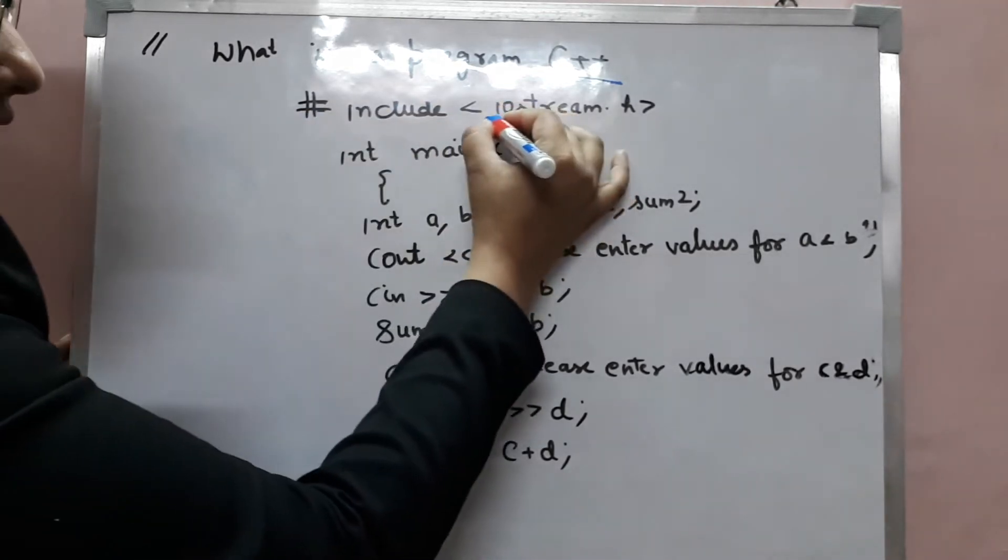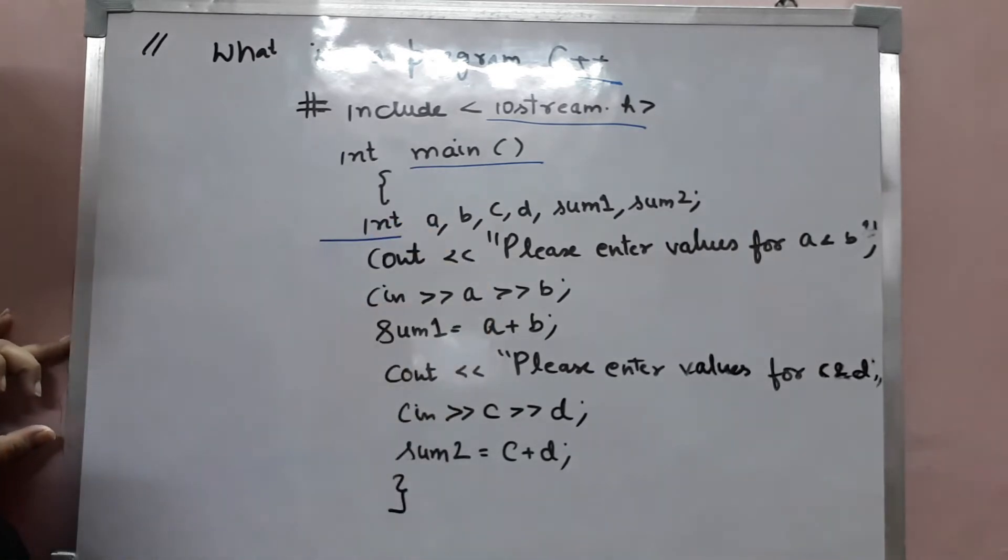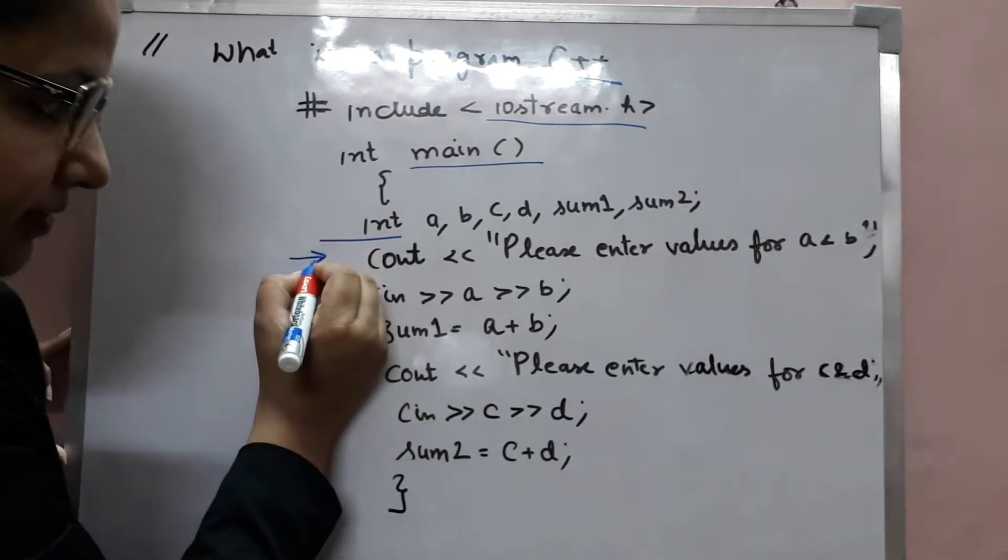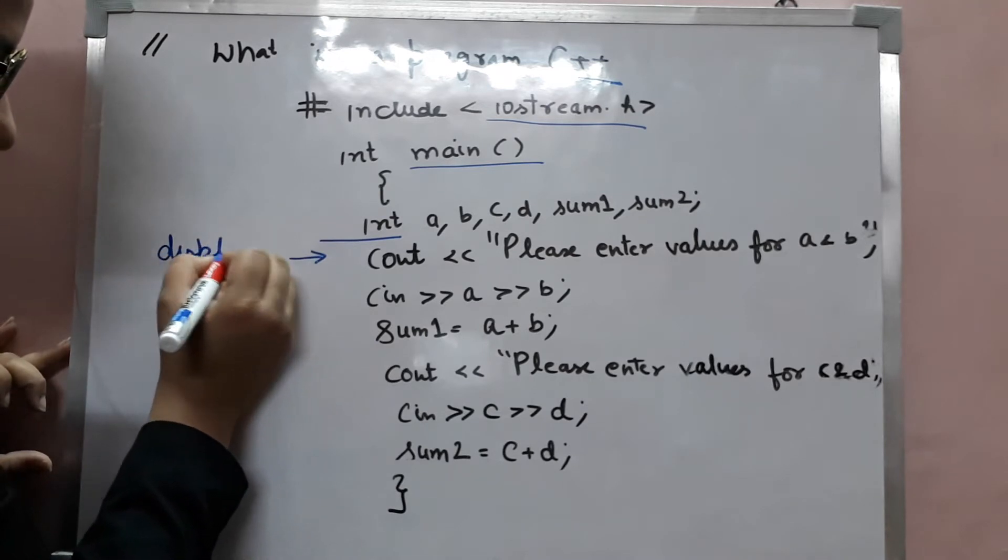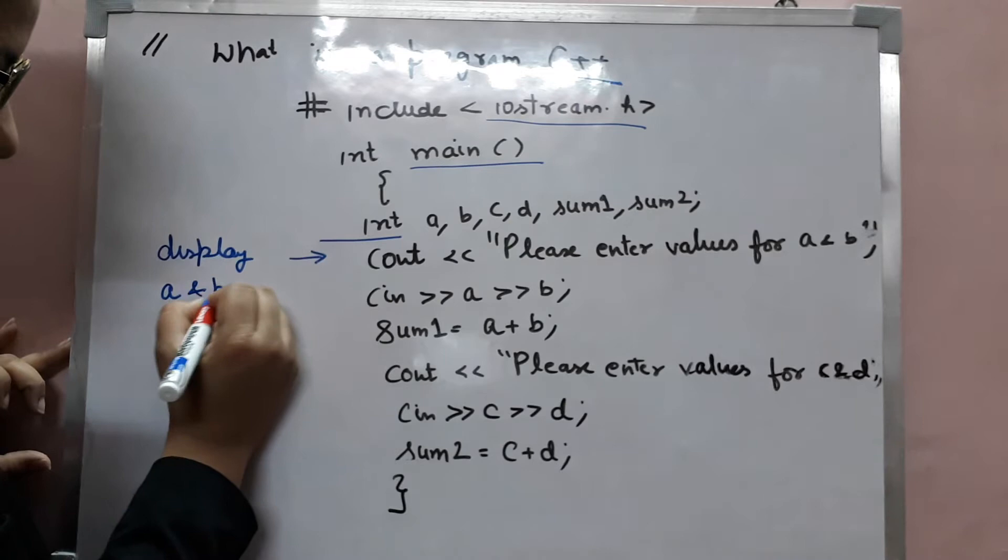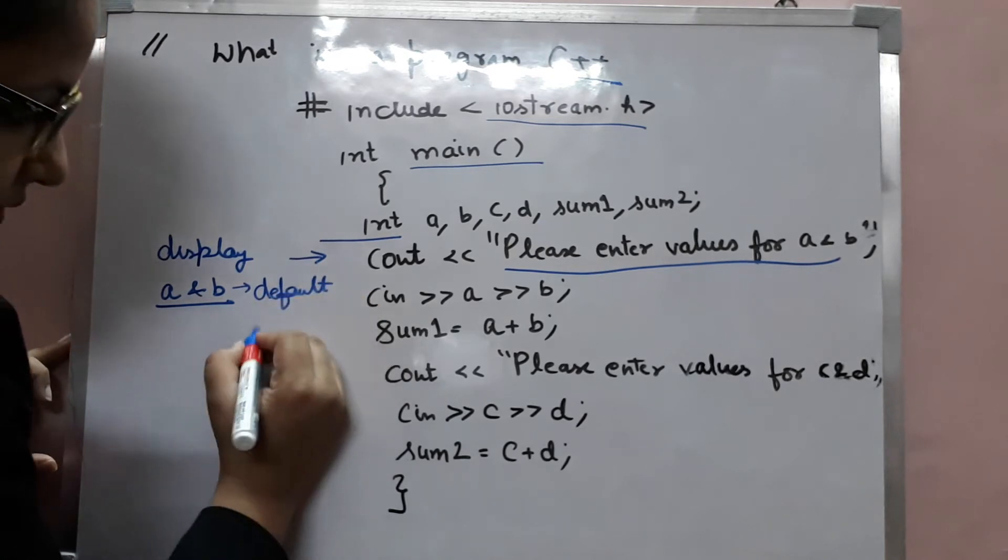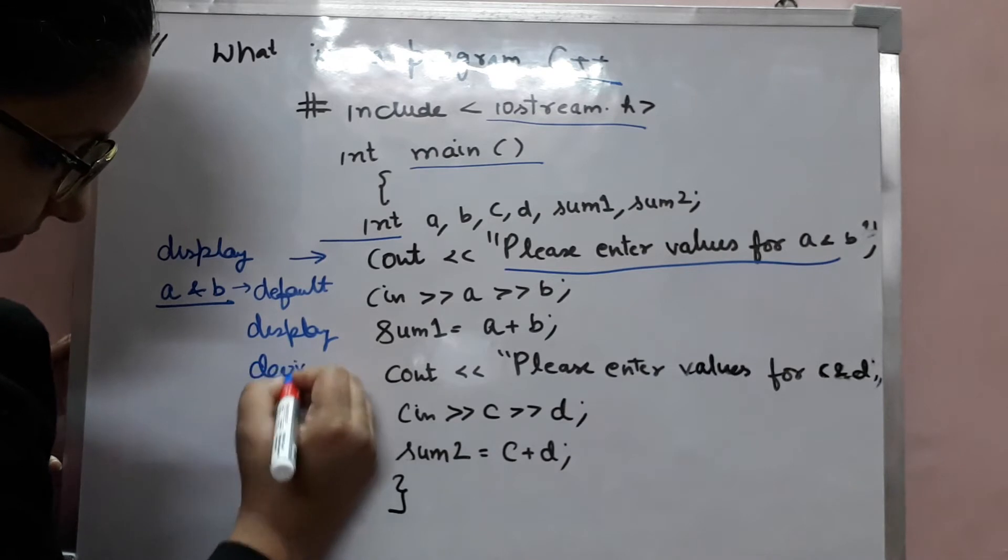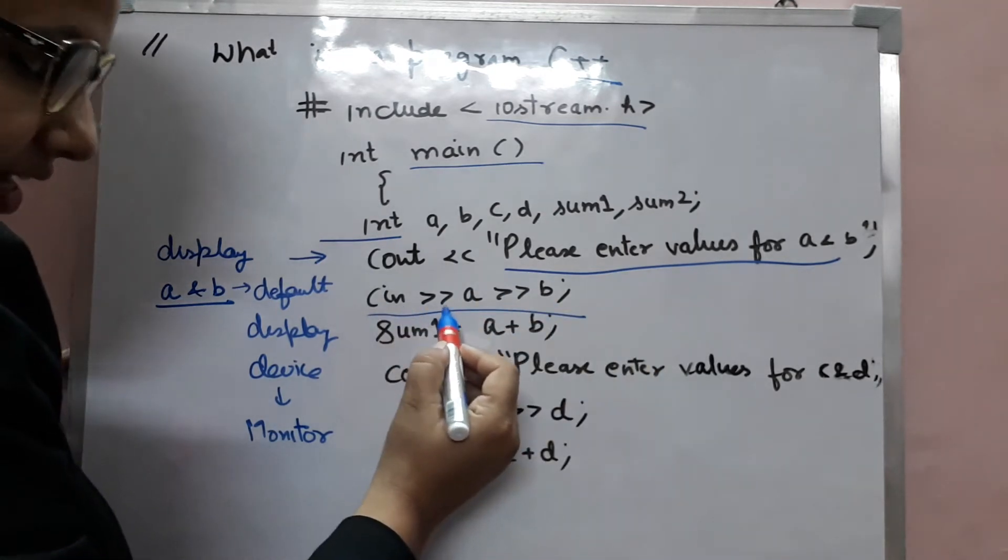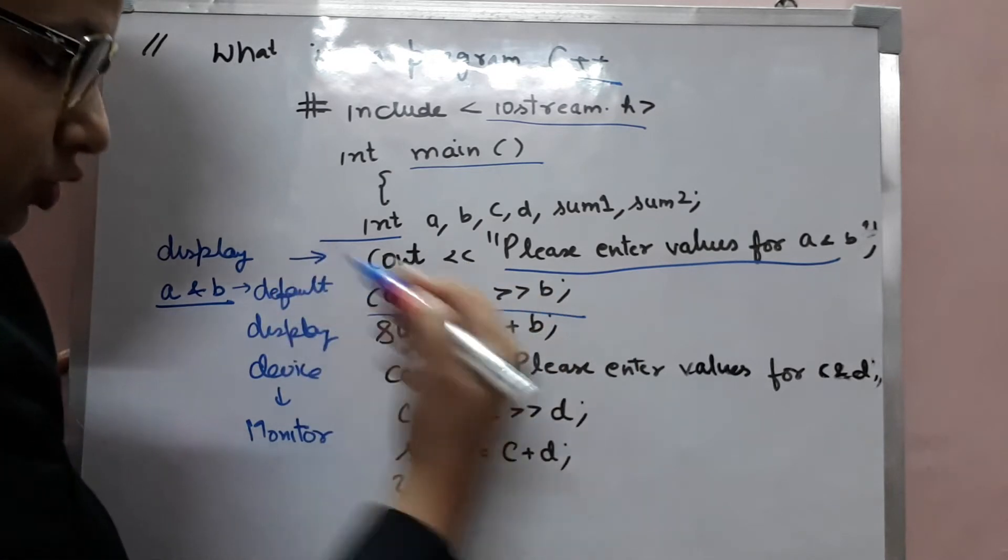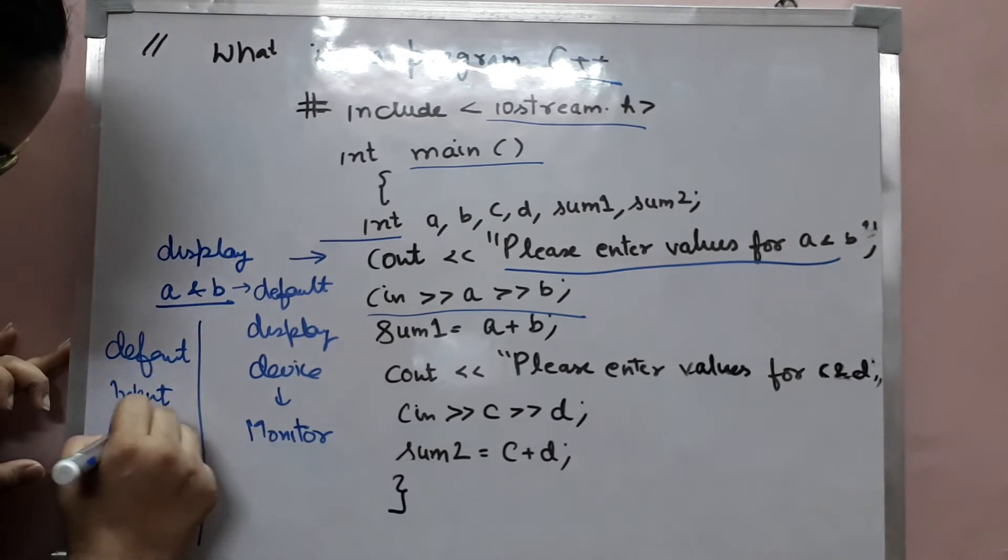For example, our program firstly has included our header file. Next is the starting point of our program. Next is variable declaration. This statement is telling our computer to display A and B, that is this message, to our default display device, that is monitor. Next statement, that is cin, is getting new values in A and B variable through default input device, that is our keyboard.